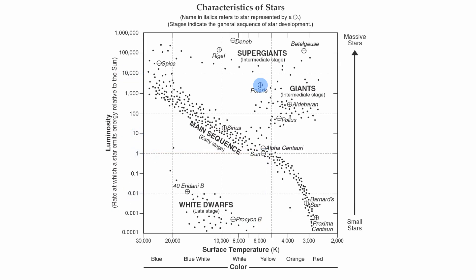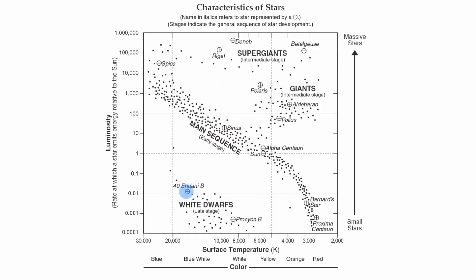Take Polaris, for instance. Polaris has a surface temperature of about 6000 degrees Kelvin, making it roughly a yellow star, and it's somewhere in the neighborhood of about 5000 times brighter than our Sun. You can also get a star like Eridani B, which has a surface temperature around 18,000 degrees Kelvin and is definitely a blue star, but it has a luminosity of about one one-hundredth as bright as our Sun. A lot of times the brightness of stars corresponds with actual size — bigger stars tend to be brighter, and smaller stars tend to be a little dimmer.